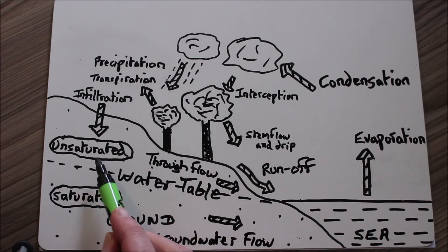Finally, movement of water through the unsaturated layer of ground is called through flow. And flow of water through the saturated ground is called groundwater flow.